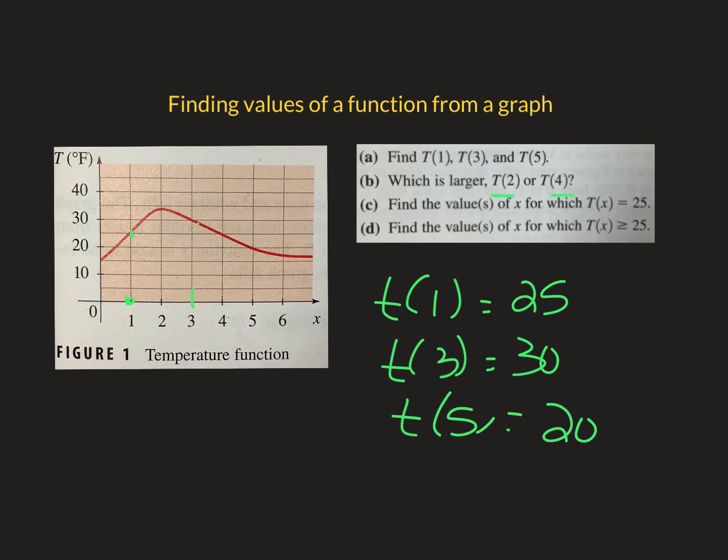This one says which is larger, t2 or t5. t of 2 is way up here. t of 5 is way down here, so definitely t of 2 would be the larger right there. And that's probably what we're going to do with those.